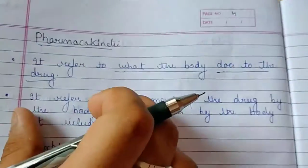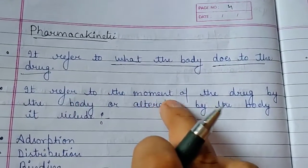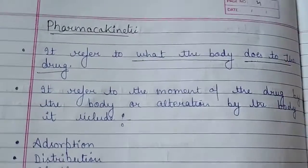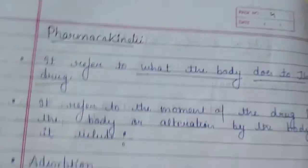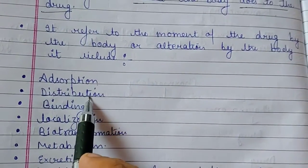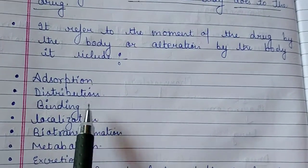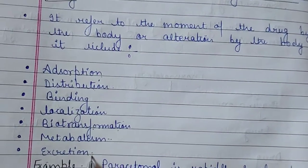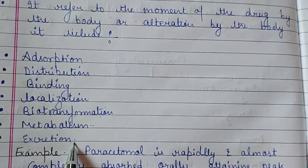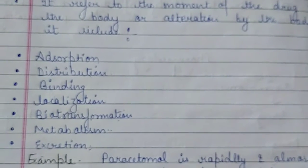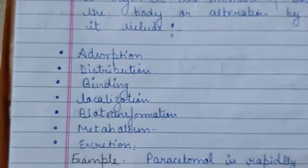Pharmacokinetics refers to the movement of a drug by the body or alteration by the body. When a drug enters the body, the processes include absorption, distribution, binding, localization, biotransformation, metabolism, and excretion. The four main processes are absorption, distribution, metabolism, and excretion.